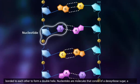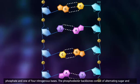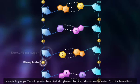Nucleotides are molecules that consist of a deoxyribose sugar, a phosphate, and one of four nitrogenous bases. The phosphodiester backbones consist of alternating sugar and phosphate groups.